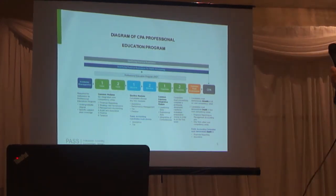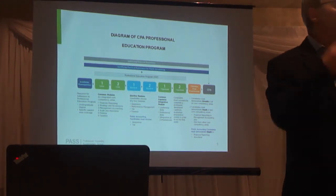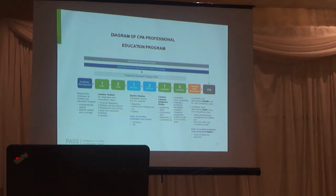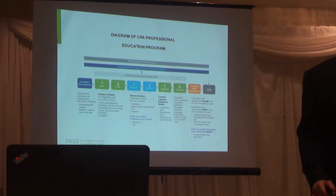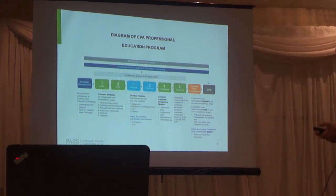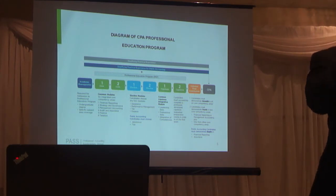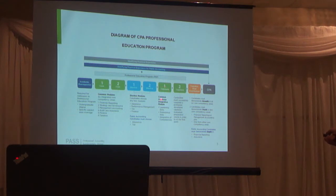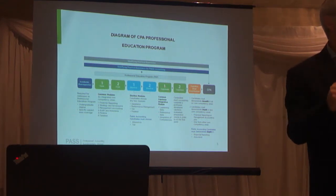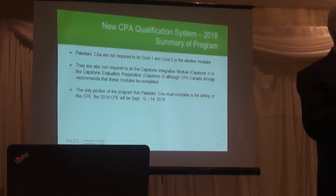Then everybody would write two electives chosen from four possible elective modules: assurance, performance management, tax, and finance. If you want your public accountant's license, you would choose assurance and tax. Otherwise, you can choose any two of the four. Students then move on to Capstone 1, then Capstone 2, and finally the CFE. Now relating this to people like yourselves — Pakistani CAs are exempt from Core 1, Core 2, and the electives. You don't have to take these modules or write these exams, but you are expected to have the knowledge you would normally need to pass them.